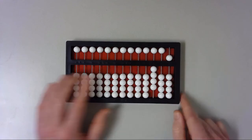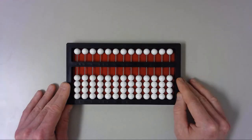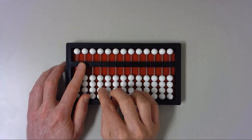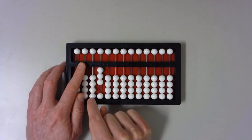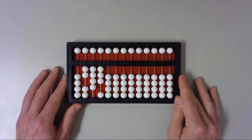How is that for you? Let's practice one more. Read the problem: 243 times 5. What's the multiplicand? The number to be multiplied is 243. What's the multiplier? The number doing the multiplying is 5. Set the problem — set the multiplicand 243 in the billions section: a 3 in the ones column, a 4 or 40 in the tens column, and a 2 or 200 in the hundreds column. Set the multiplier 5 in the millions section.